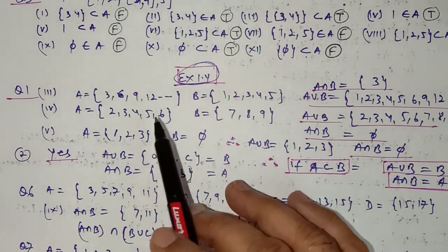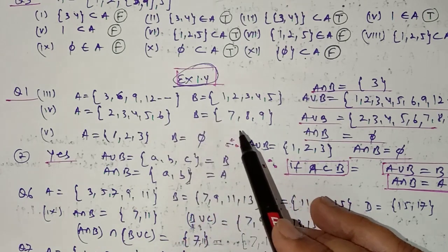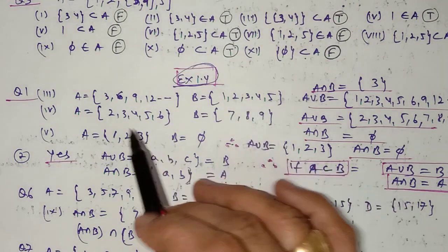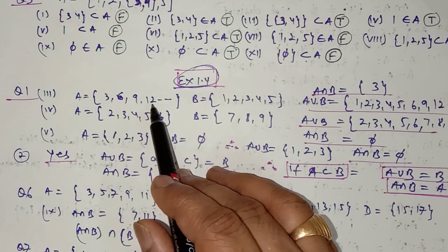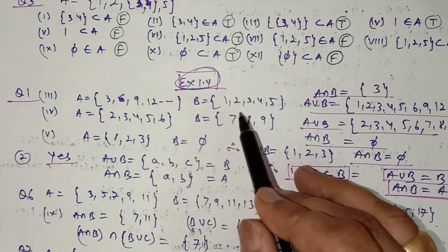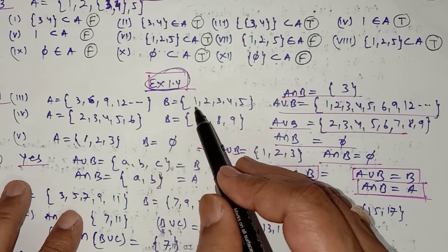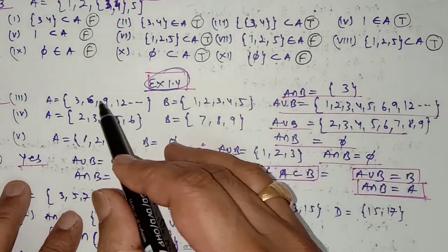In Exercise 1.4, question number 1, a set X and set Y are given and you have to find X union Y. I'm taking the third part because in question number 5 you also have to find the intersection of these sets. Set A is defined as natural numbers that are multiples of 3: {3, 6, 9, 12, ...}, and set B is natural numbers less than 6: {1, 2, 3, 4, 5}. The union contains elements belonging to either A or B: {1, 2, 3, 4, 5, 6, 9, 12, 15, ...}.